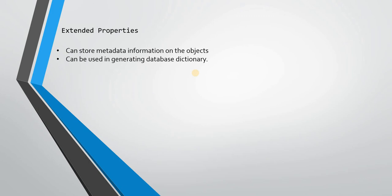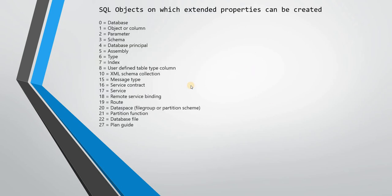Extended properties in very simple terms can store metadata information on objects, and this metadata information can then be used for generating a database dictionary. Consider if you have a very large database — it becomes mandatory and very important that you create a database document or database dictionary. Also, from time to time, whenever new objects are being added, they should get updated into a database document. Extended properties play a very important role in defining your database document and dictionary.